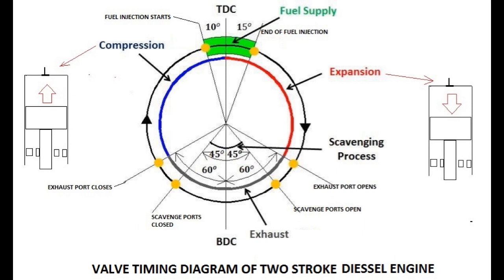Compression Stroke: At the end of the expansion stroke, the piston which is at BDC starts moving towards TDC. The compression of the diesel sprayed charge starts, along with the exhaust of combustion residuals through the exhaust port. The piston closes both the inlet port and exhaust port due to its movement from BDC to TDC, which raises the pressure inside the combustion chamber. At the end of the compression stroke, when the piston reaches TDC, combustion of the diesel sprayed charge due to the high pressure takes place, and the cycle repeats.